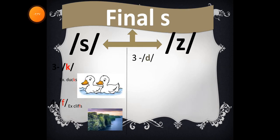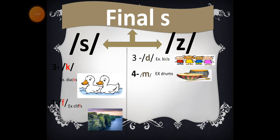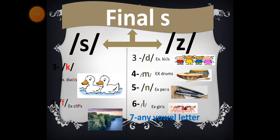Number three: the /d/ sound, for example kids, kids. Number four: the /m/ sound, for example drums, drums. Number five: the /n/ sound, for example bins, bins. Number six: the /l/ sound, for example girls, girls. Number seven: any vowel sound, for example trees or bees.